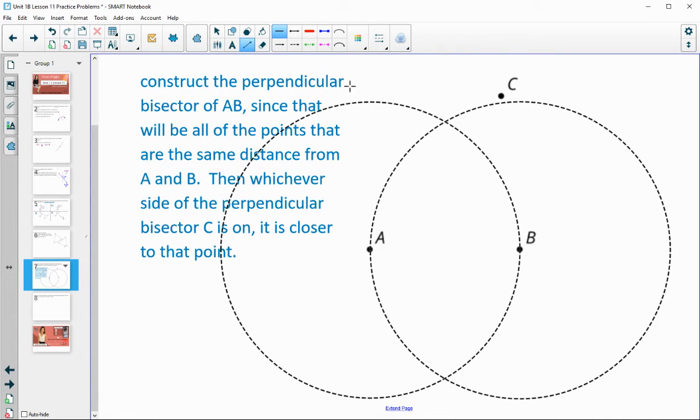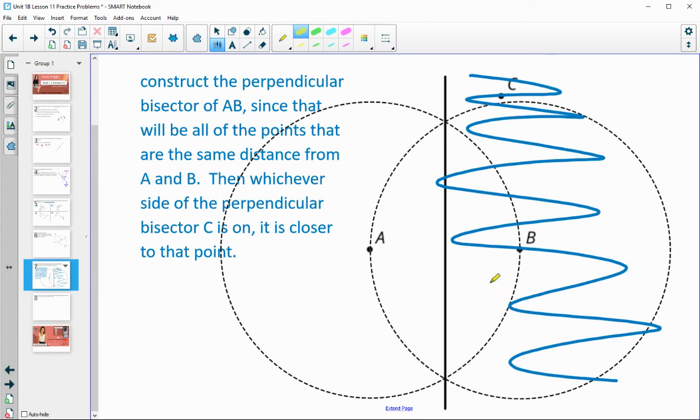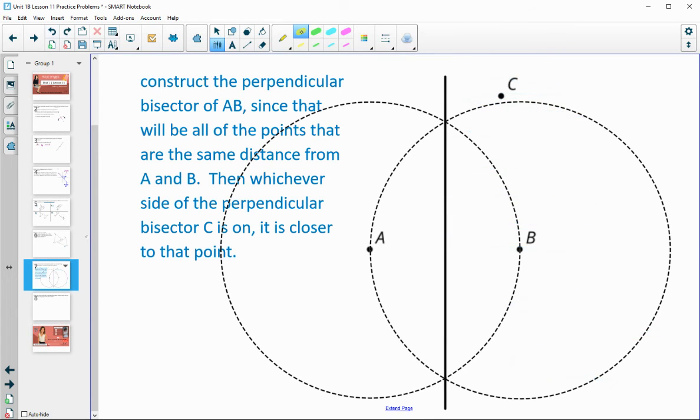So here would be the perpendicular bisector of segment AB. The points along this line are equidistant. So any of the points in this side are going to be closer to B. This side is going to be closer to B. So C is on the B side. C is closer to B.